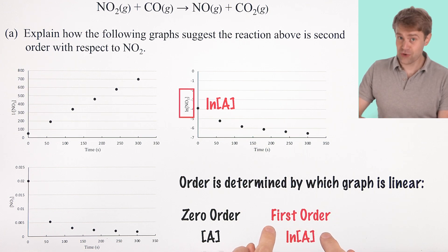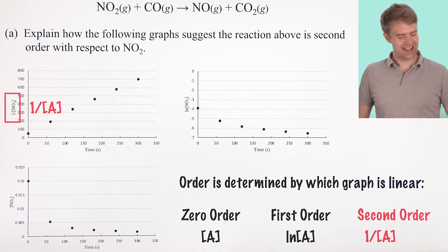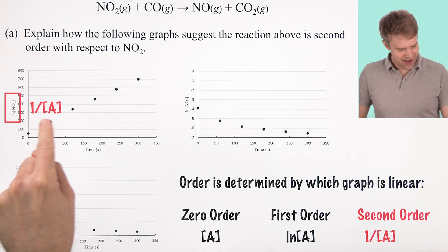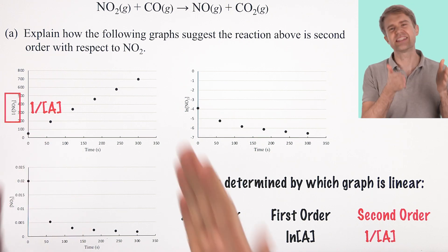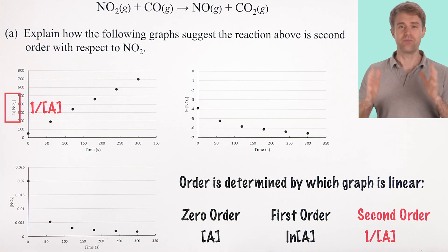If the natural log of A graph is linear, we've got a first order reaction. And if the inverse of the A graph, the 1 over A graph is linear, we've got a second order reaction. So that's the pattern.